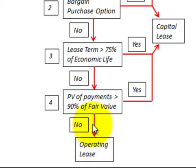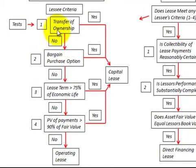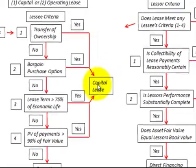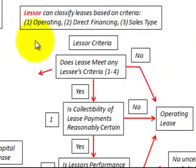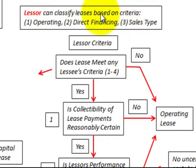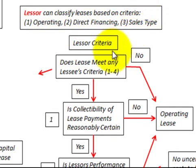Through our four test criteria, we determine whether the lease is an operating lease or a capital lease for the lessee. Now let's move over to the lessor. The lessor can classify the lease either as an operating lease, a direct financing lease, or a sales type lease.